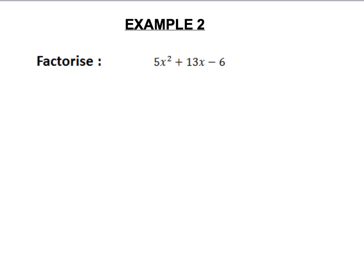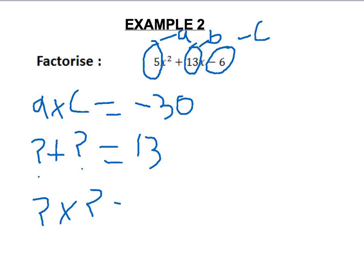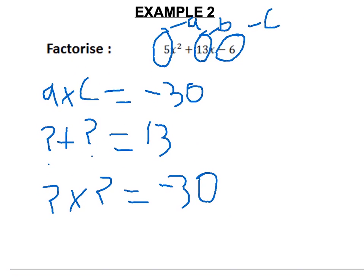We now do a second example which involves 5 instead of a 3. We circle the 5 again which is A, the same again for B and C. So we therefore know that A times C equals minus 30. We therefore know the two numbers added together make 13, which is our B, and two numbers times together equal minus 30. The two numbers here are 15 and minus 2.